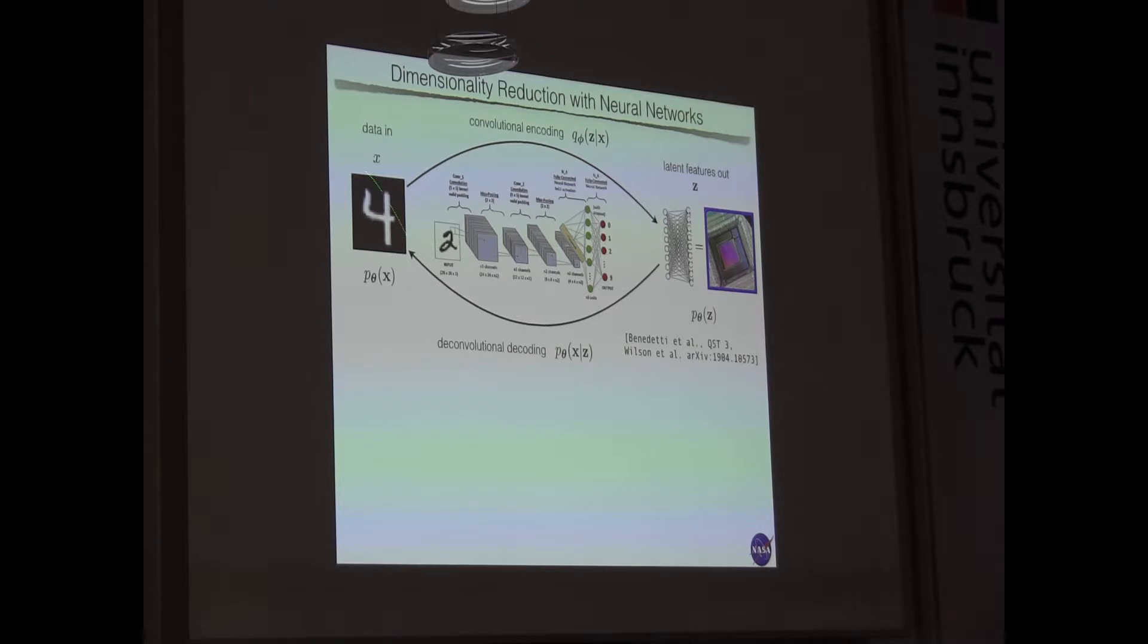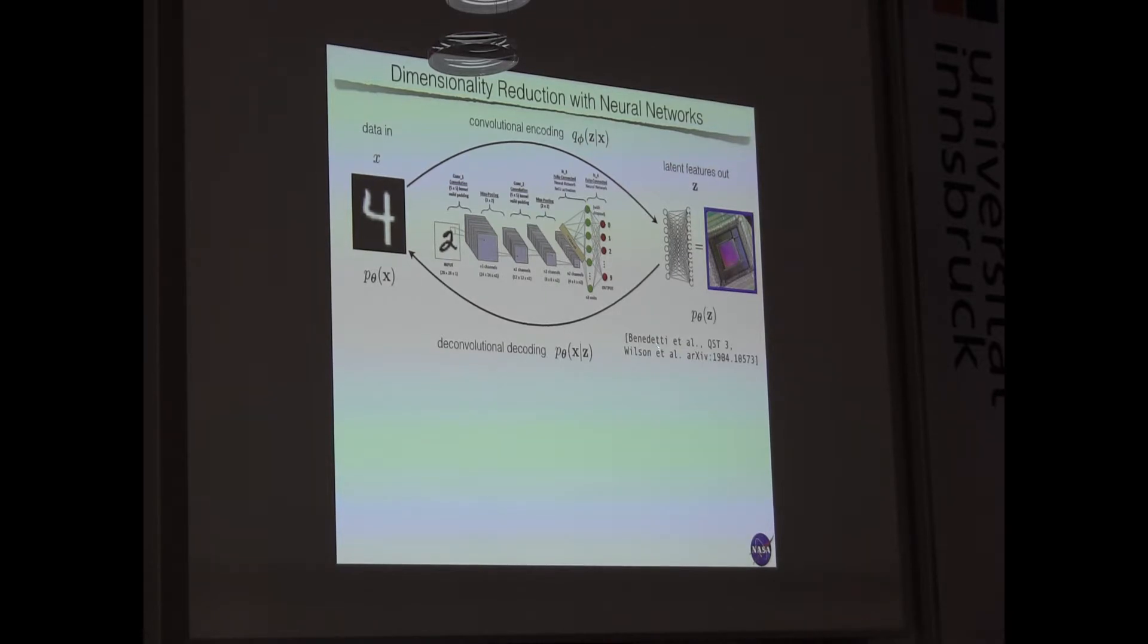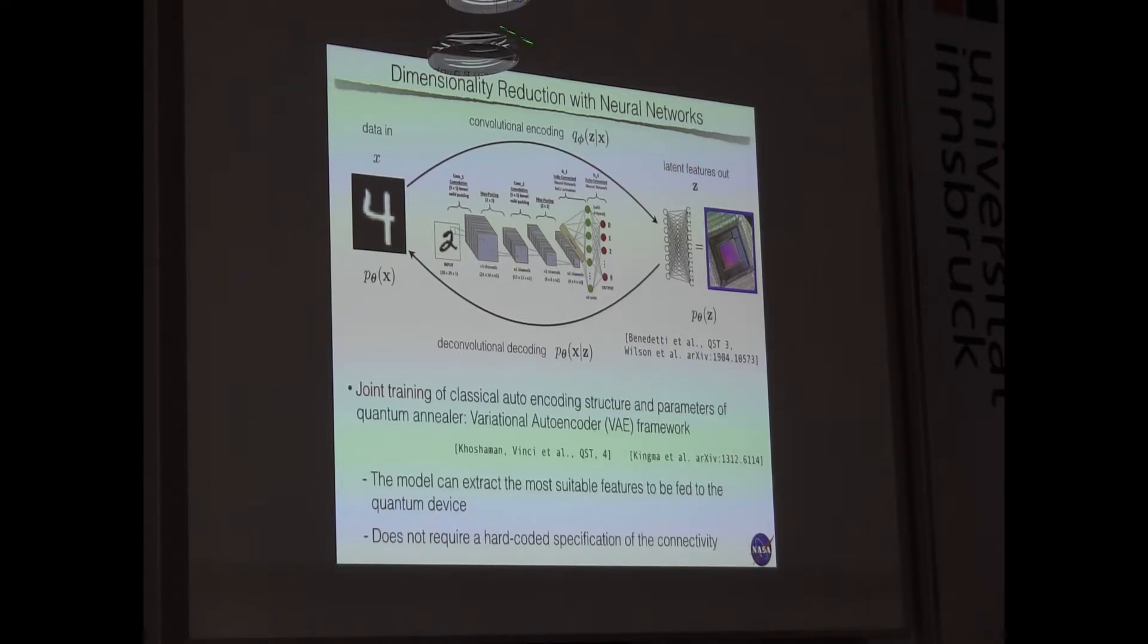And one thing is to, instead of trying to feed data directly to the hardware, you use some state-of-the-art techniques like Deep Neural Net, in this case, for example, Convolutional Neural Net, to encode your dataset into some latent layer of features, which is actually what you want to feed to the hardware. So it's really a way to encode, using machine learning techniques, large-scale problems to your quantum device. And this idea is very general, maybe also a simple idea, and was also, I guess, introduced first by Benedetti et al.